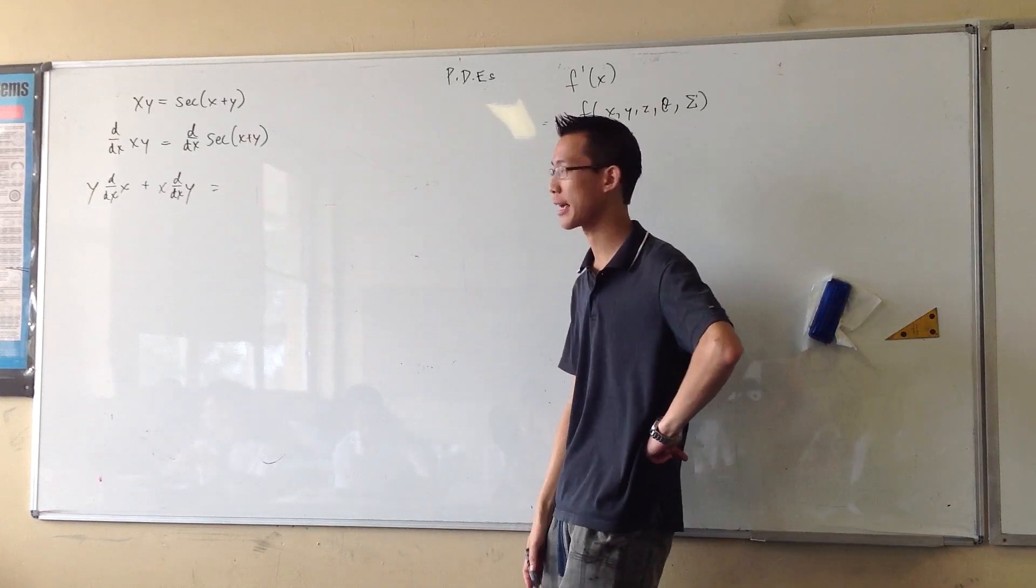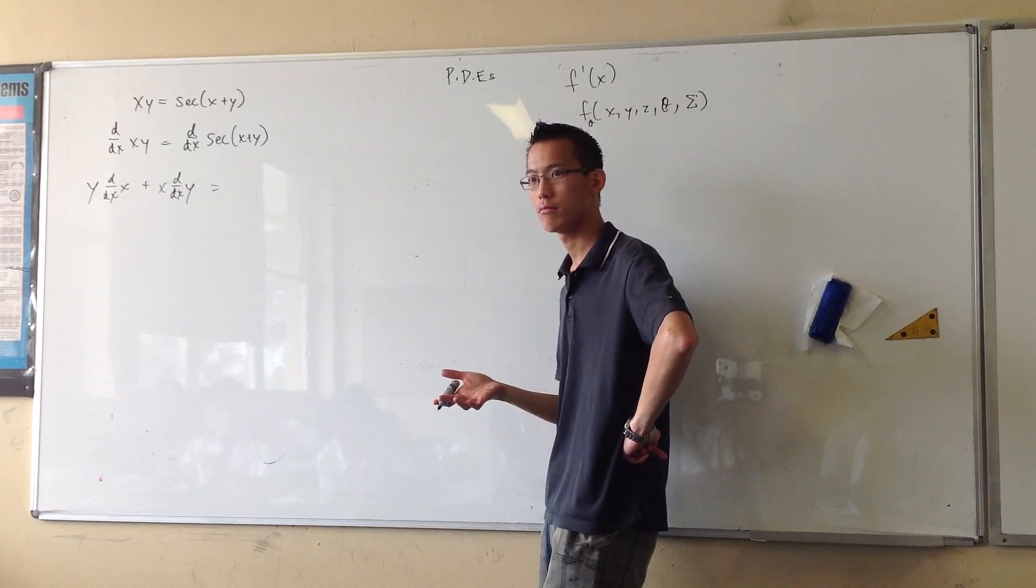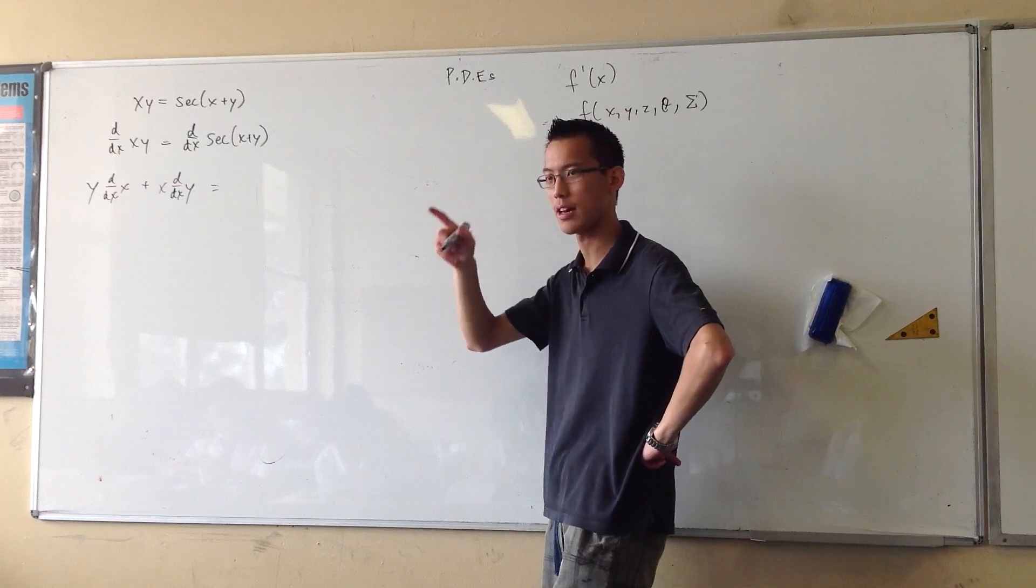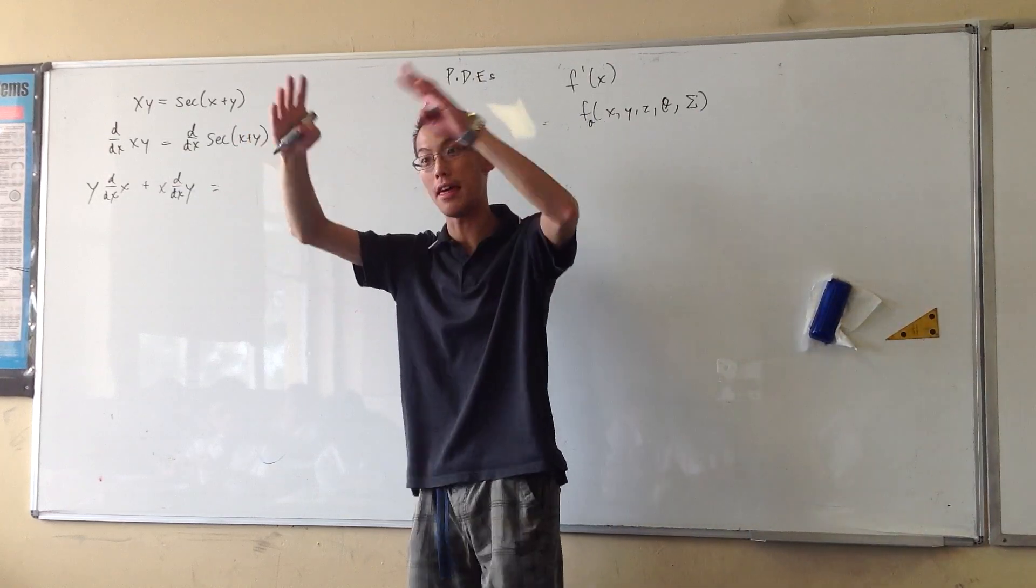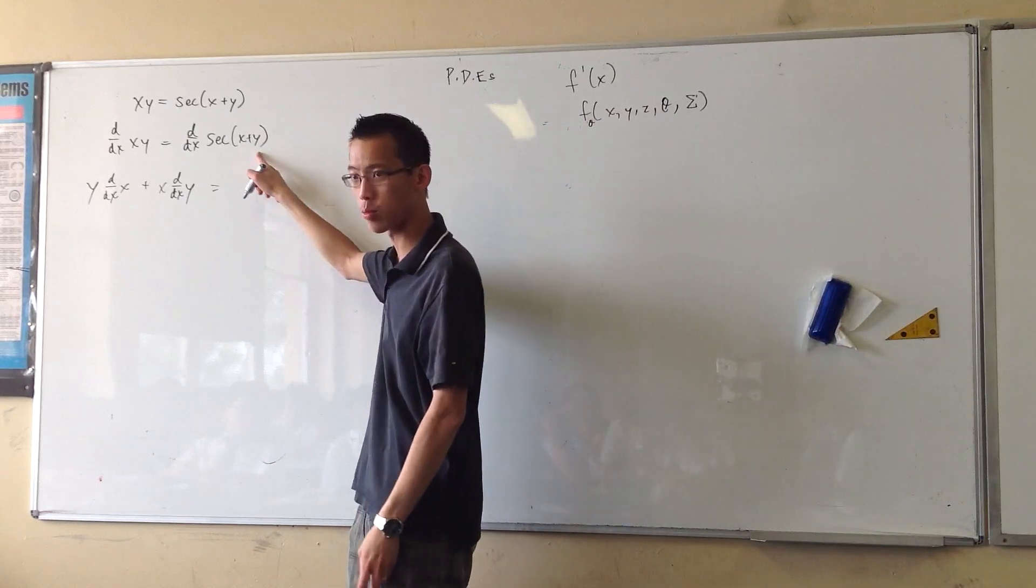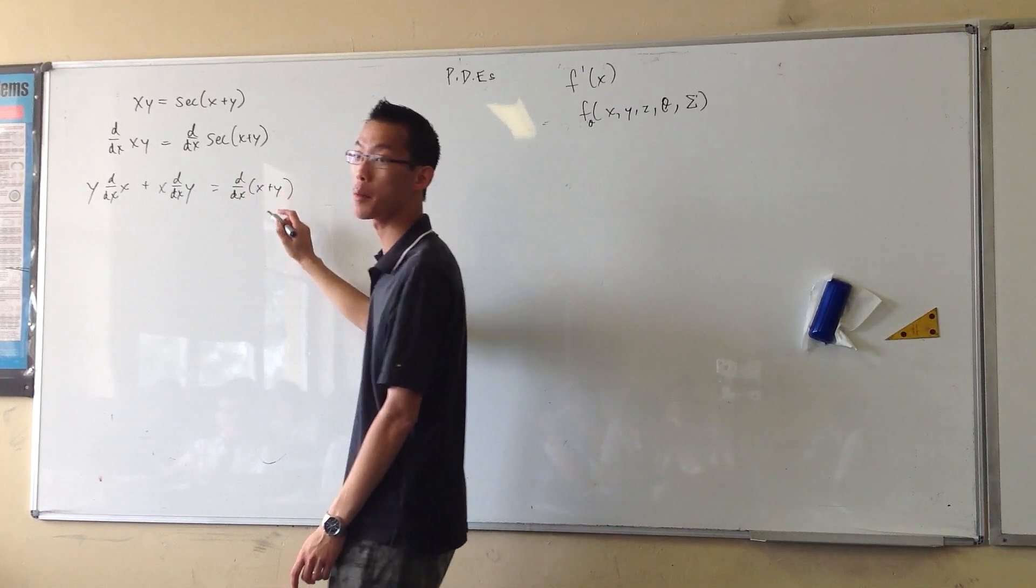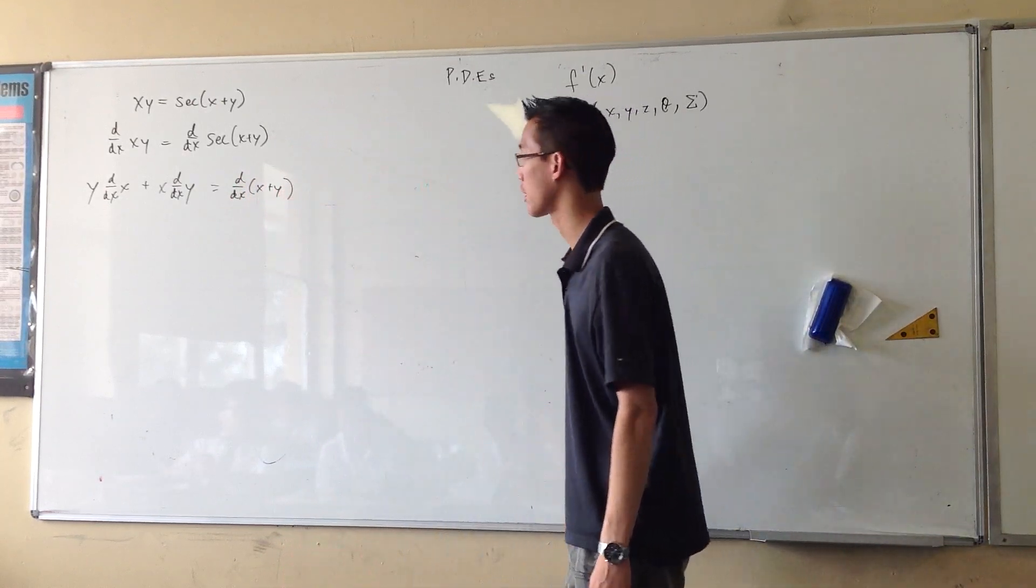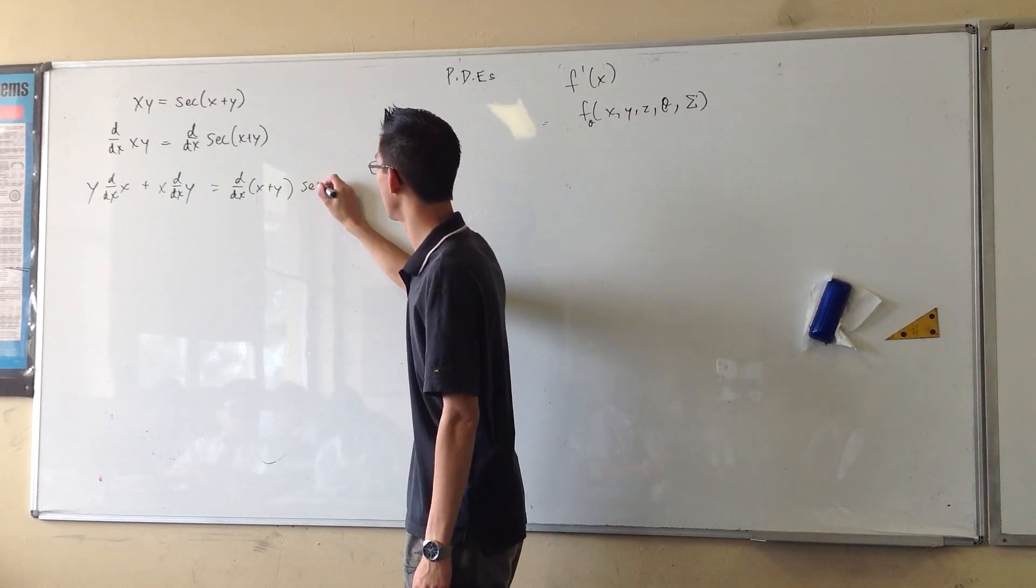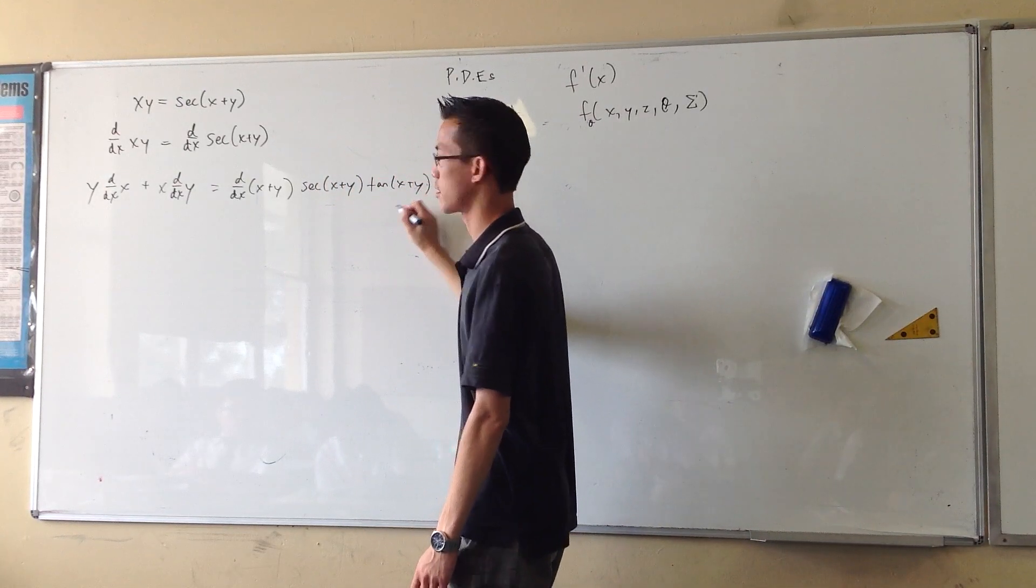Now you do the right hand side, which is chain rule. So, this is sec, when you differentiate sec, you get sec tan. Now, sorry, I skipped a step. Because of the chain rule, I should probably differentiate the inside first, and then the outside. So, the derivative of the inside is x plus y. I'm going to differentiate x plus y. That would be my inside derivative, whatever that is. And then I multiply that by the derivative of the outside, which is sec tan. Sec(x+y) and tan(x+y).